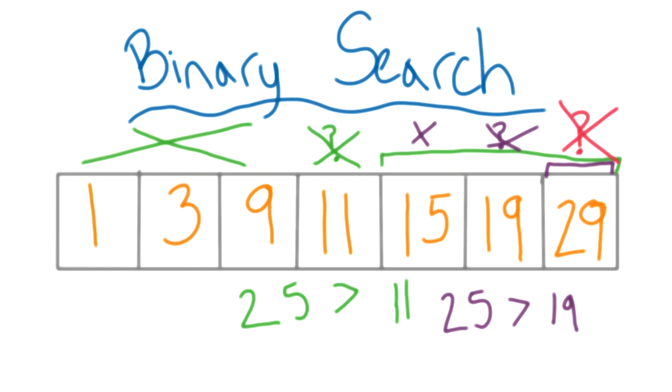And now we're at the end. We've checked 19 and 29, two numbers side by side, and we still don't see 25. Thus, we can conclude 25 does not exist in our array.